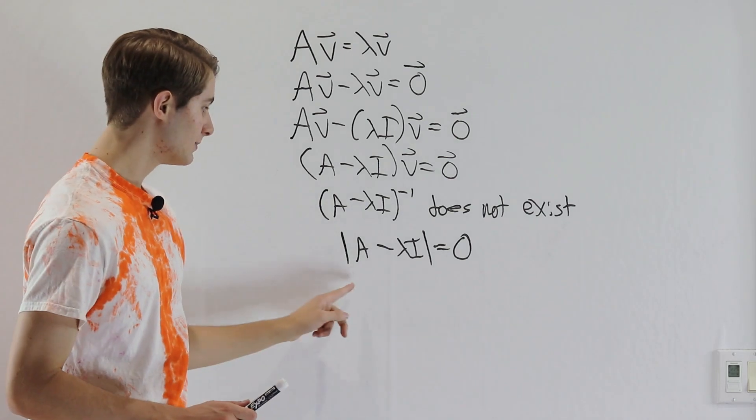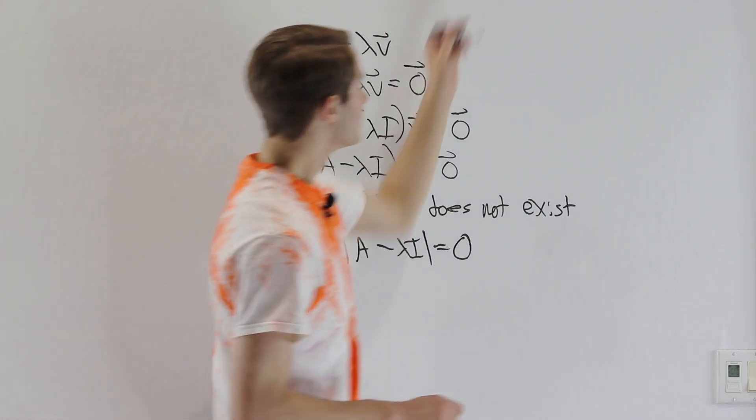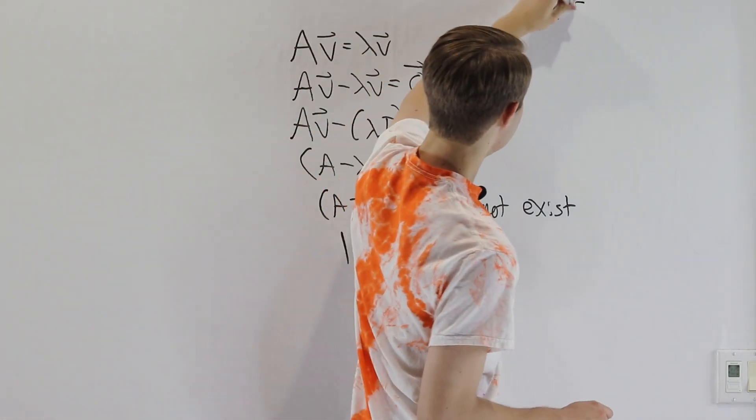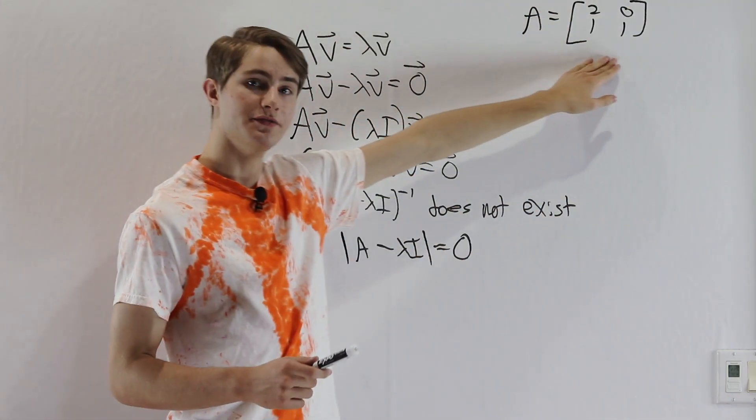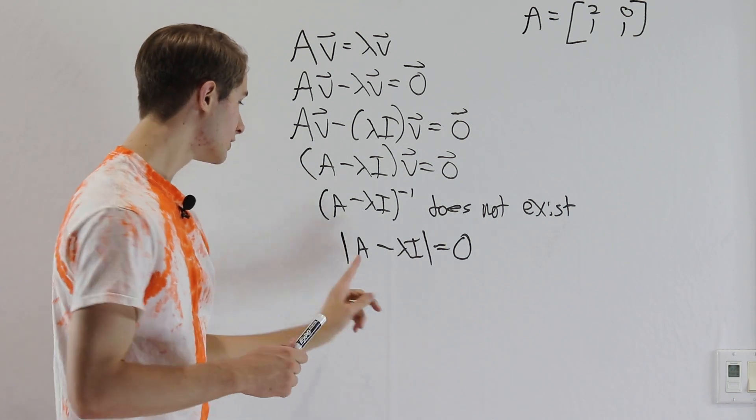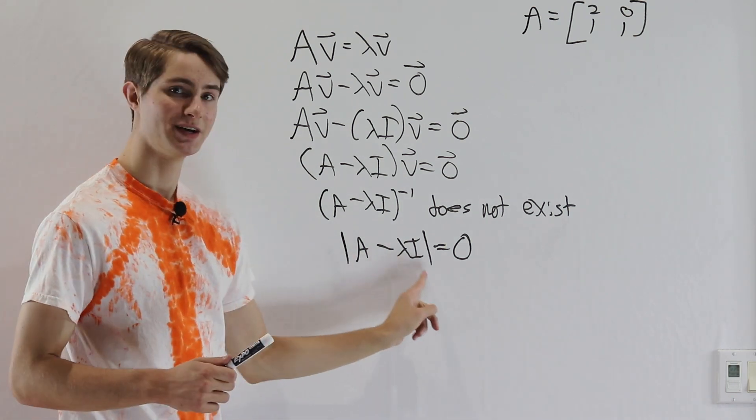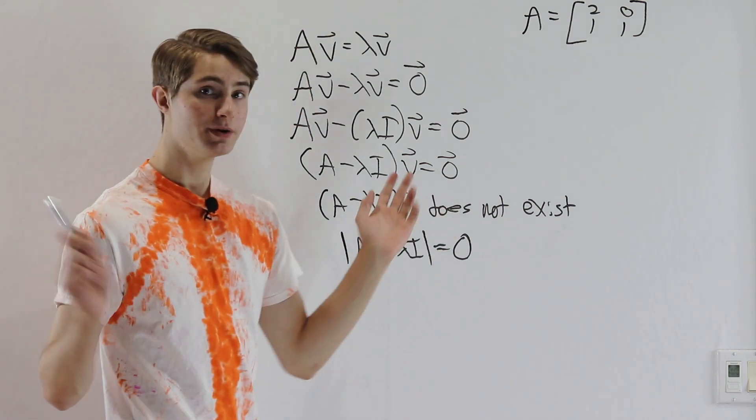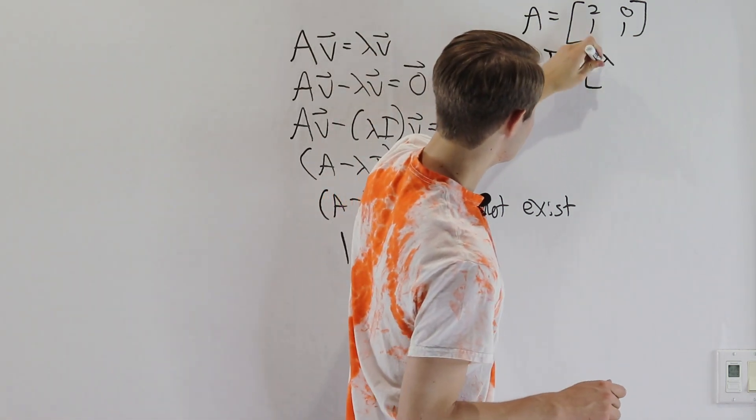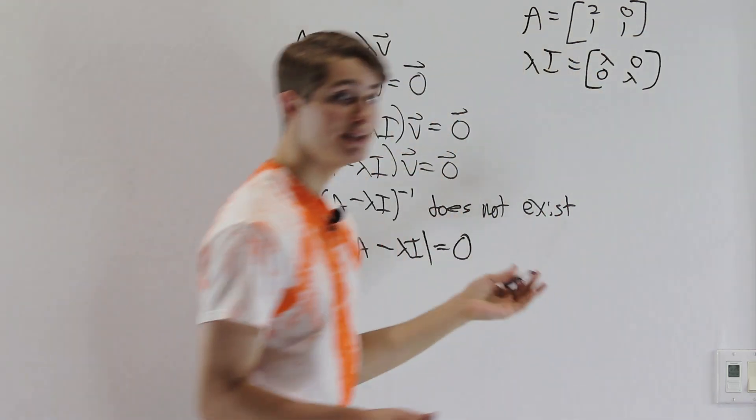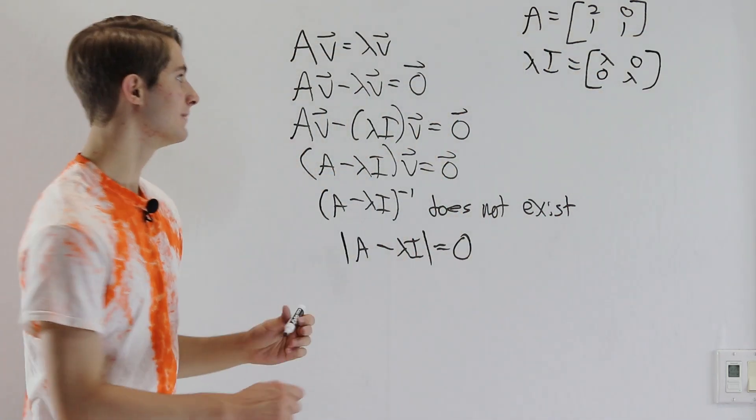So let's look at an example of what this means. Let's say we have the matrix A being equal to [[2,0],[1,1]]. And we say find the eigenvalues of this matrix. Well, first of all, we want to figure out what A minus lambda I is equal to. And we don't know what lambda is, but we know that lambda I is going to be of the form [[lambda,0],[0,lambda]]. So we take the identity matrix and just scale everything up by lambda.